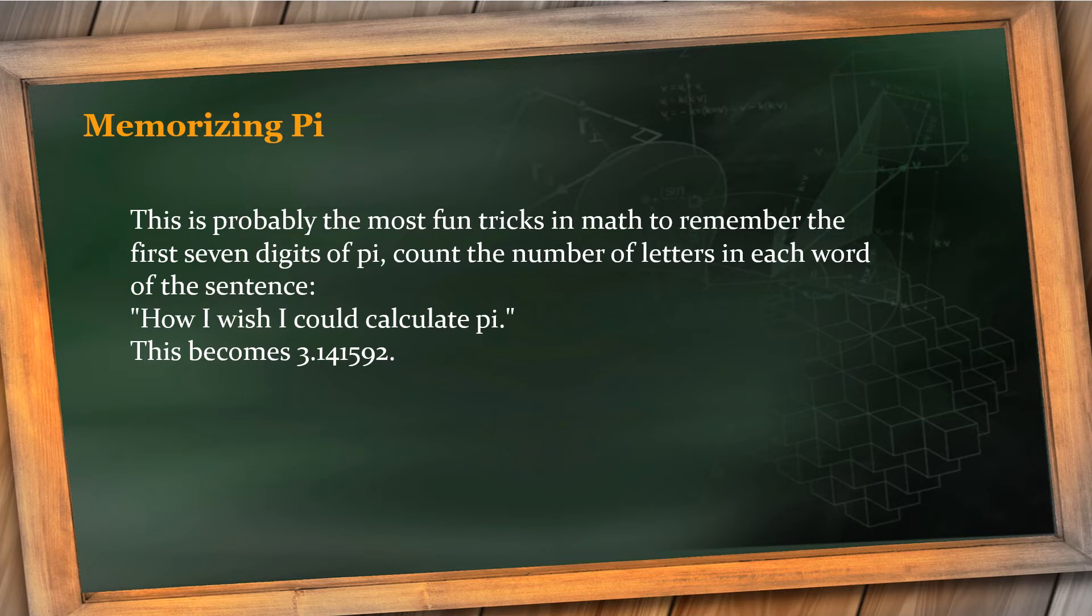'I' again, one letter, so 1 is the digit. 'Could' has five letters, so next digit is 5. 'Calculate' has nine letters, so the next digit is 9. 'Pi' has two letters, so the number is 2. When I write it properly, it becomes 3.141592. That is 'How I wish I could calculate pi.' So yes, isn't it easy?